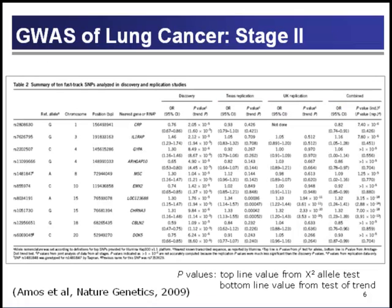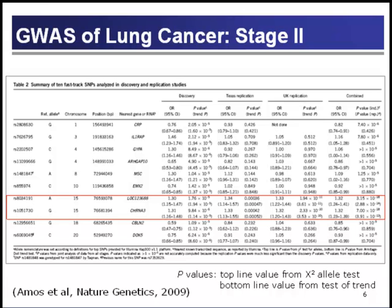The next slide is a table summarizing results from their replication analysis. The table lists the reference allele, the genomic region, the nearest genes, and the odds ratios along with p-values from the test of association. The red box calls your attention to the two SNPs — of the 10 — that actually replicated in the two additional study populations. These two SNPs are on chromosome 15, with odds ratios around 1.3 and very low p-values of approximately 3.15 times 10 to the minus 18 and 7 times 10 to the minus 18.